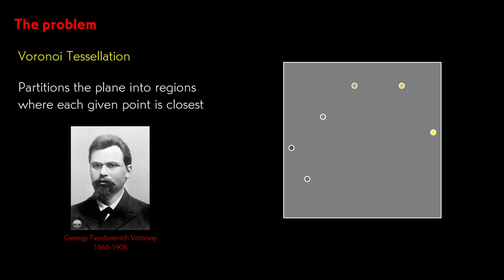Those of you who know some computational geometry will recognize this as the problem of finding the Voronoi tessellation, named after the Ukrainian mathematician Georgi Feodosevich Voronoi. It divides the plane into a polygon for each point of interest that contains that point's region of influence, the part of the plane that is closer to that point than any other point of interest.